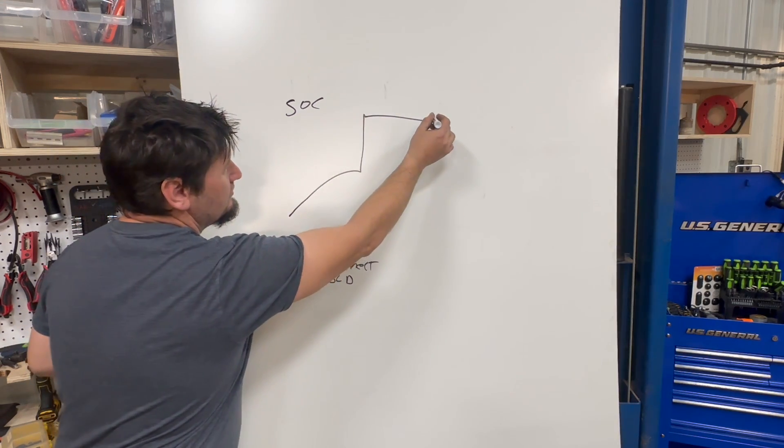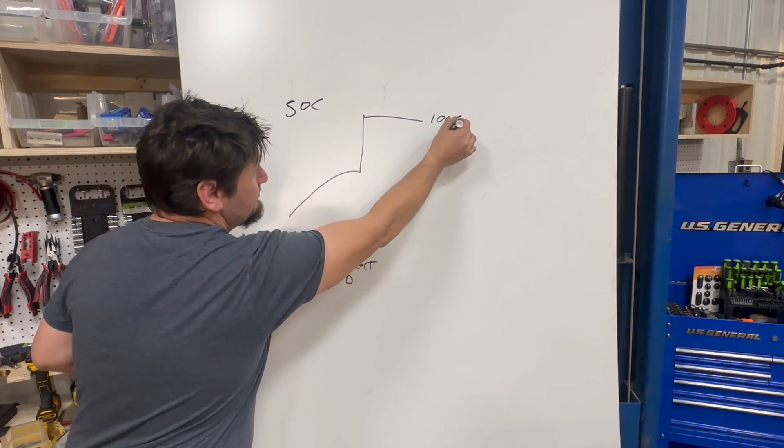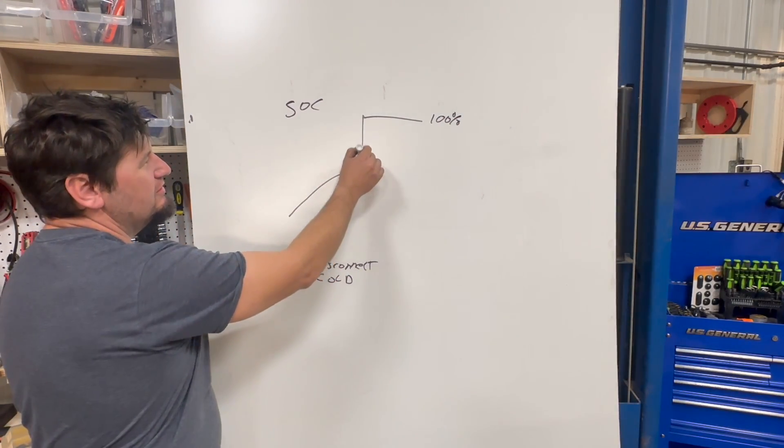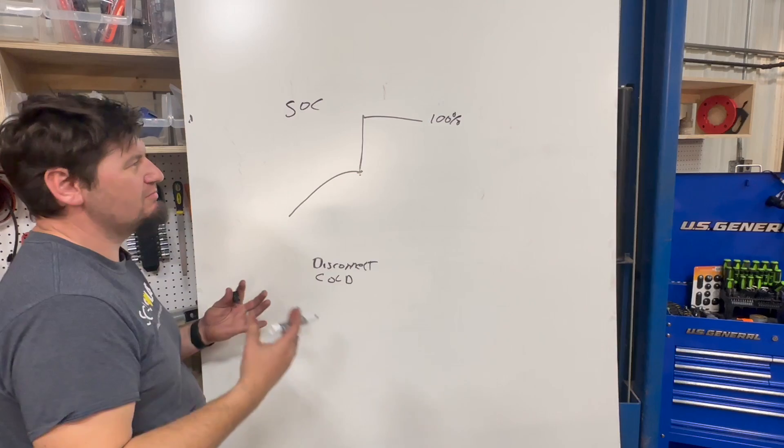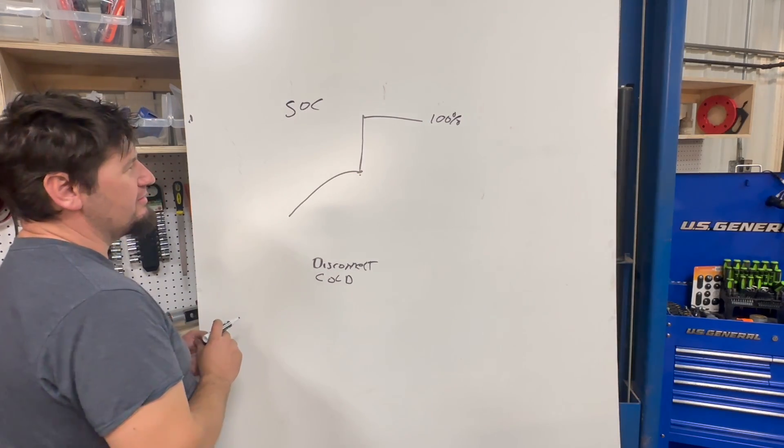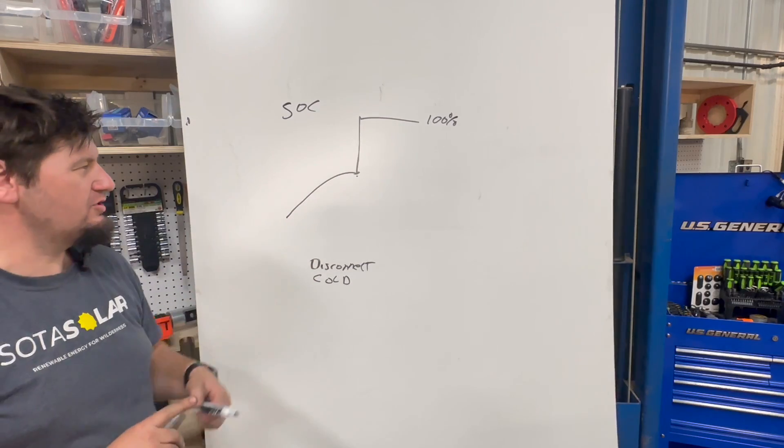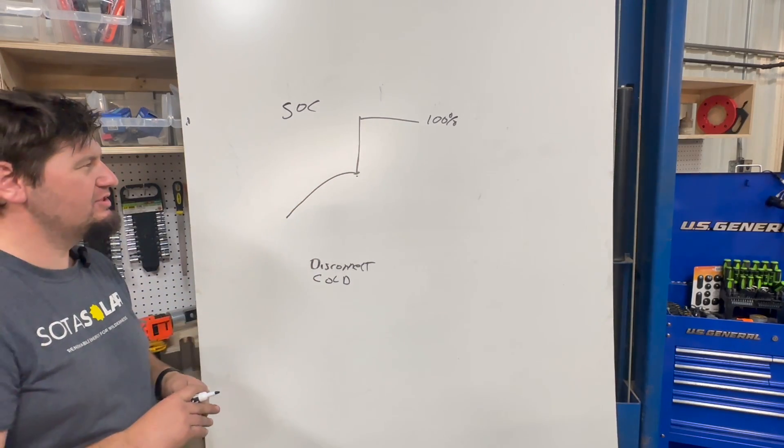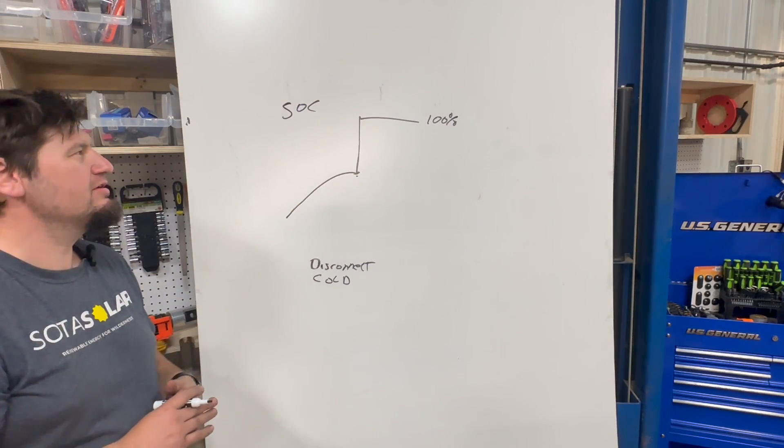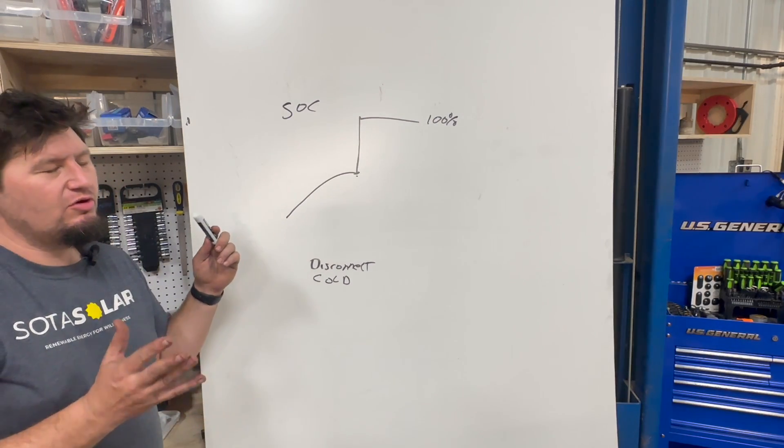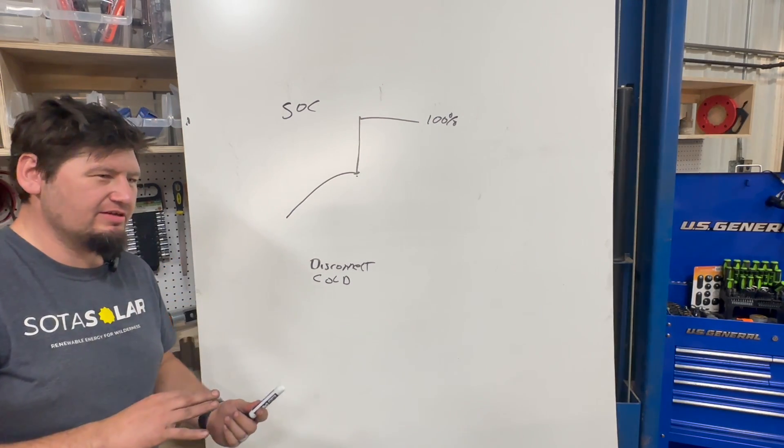And here's 100%, this jump right here, that is where something happened. It could mean that's where the battery got too cold, that could be where the battery was disconnected, something happened and it jumped up and that is a great tool to figure out what has happened after the fact.